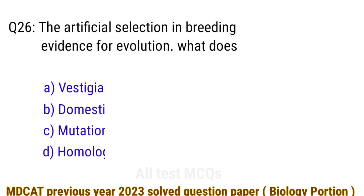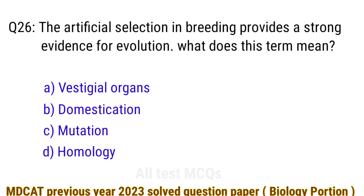Question number 26. Artificial selection in breeding provides strong evidence for evolution. The right answer is option B: domestication.